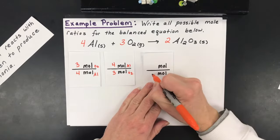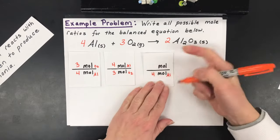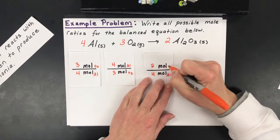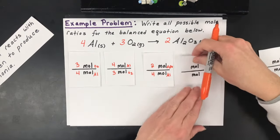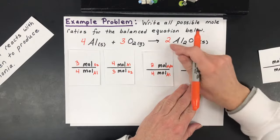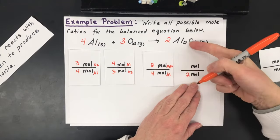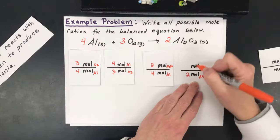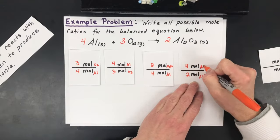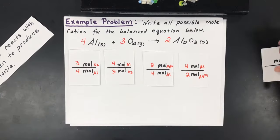Another one would be saying four moles of aluminum would make two moles of aluminum oxide. And then again the reciprocal of that would be saying if I had created two moles of that aluminum oxide I would have needed four moles of aluminum to balance that whole equation out.